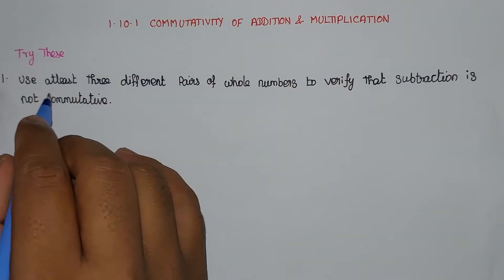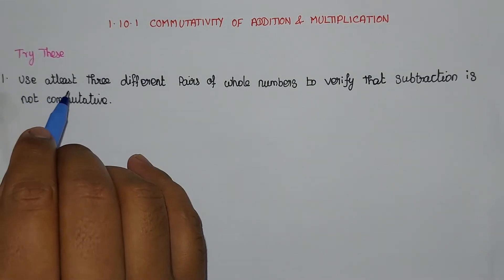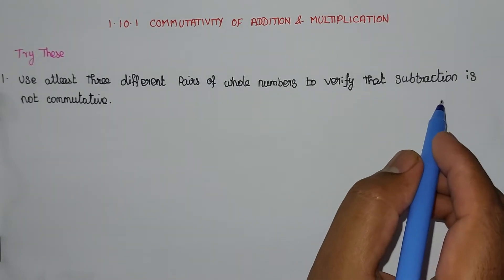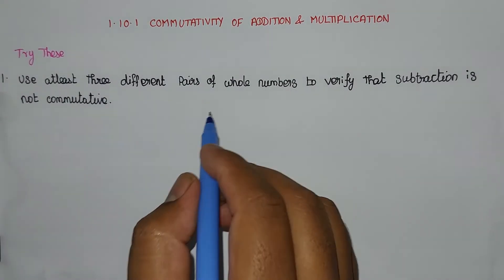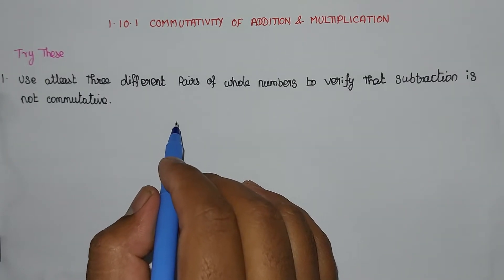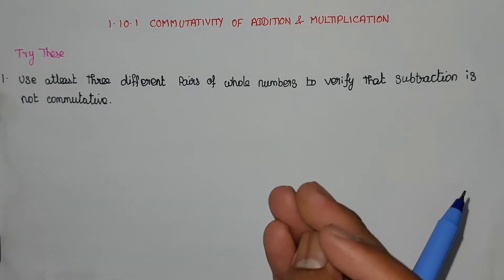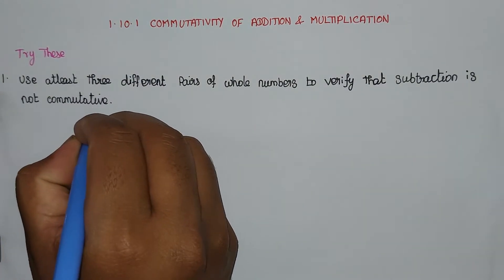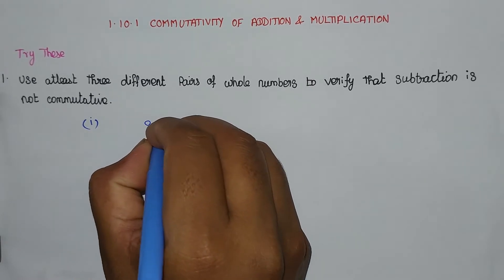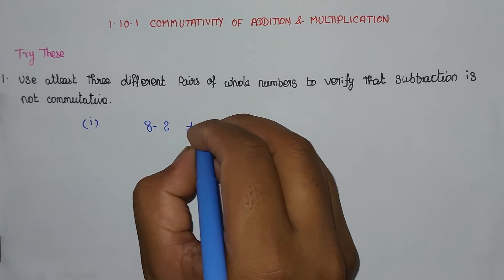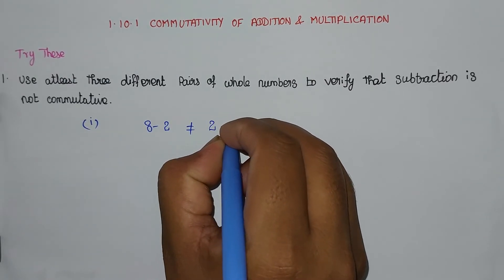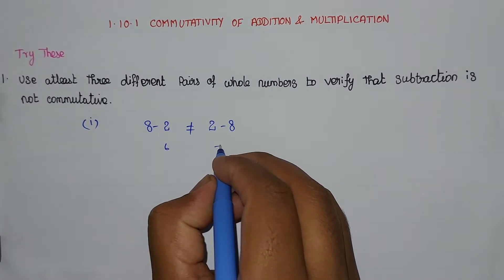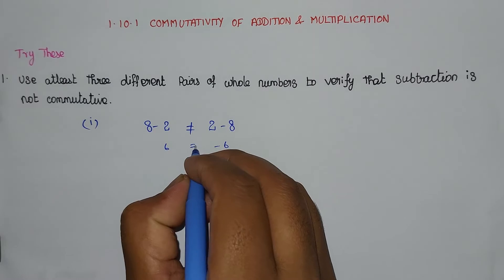Next we look at the Try This section. Problem Number 1: Use at least 3 different pairs of whole numbers to verify that subtraction is not commutative. I will prove three sets of examples. First example: 8 minus 2 is not equal to 2 minus 8. 8 minus 2 gives 6, while 2 minus 8 gives minus 6. Both are not equal.